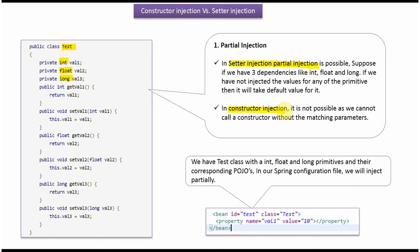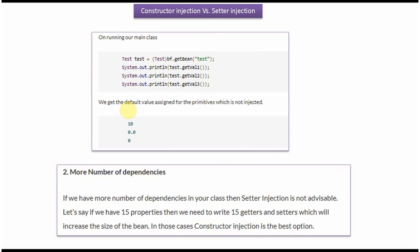Here using setter injection, we have Test class with int, float and long primitives and their corresponding POJOs getters and setters. We set the value1 as 10, and value2 and value3 are not set. When we run the main class, we get the output. For value1 we get 10 because we have set it to 10. For value2 and value3, we get the default values assigned for the primitives which is not injected.